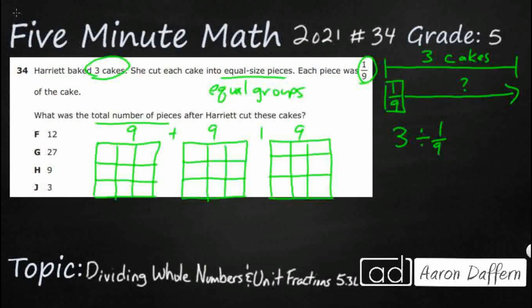All right, so it looks like — makes sense — we might have 27 pieces. So my picture lets me think it's going to be answer choice G, 27 pieces. My question is, how in the world do I get 27 from three divided by one-ninth?